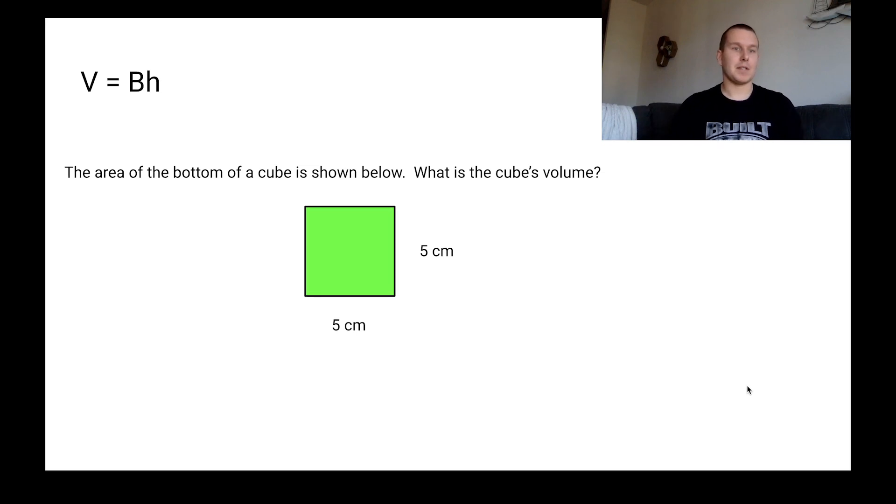All right. Our final problem says the area of the bottom of the cube is shown below. What is the cube's volume? So one thing I'm noticing right away is the word cube. And what do I know about a cube? A cube has all the same dimensions. So the length, the width, the height, everything is going to be the same. So what I'm noticing over here is this is five centimeters, this is five centimeters. So I can find the area of this pretty easily. So the area of this square is going to be five times five, which would give us 25.